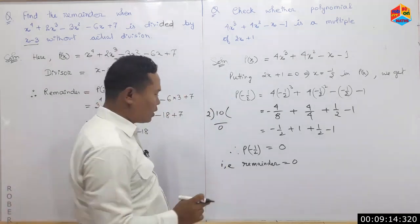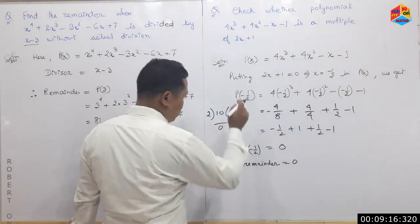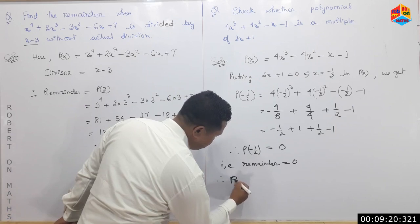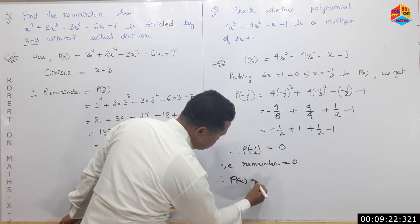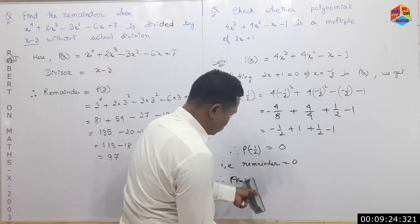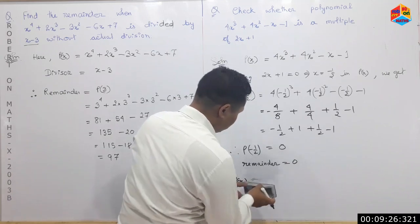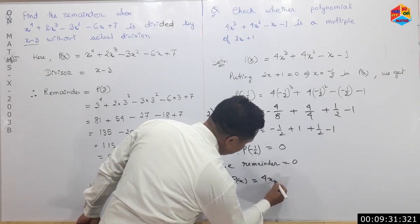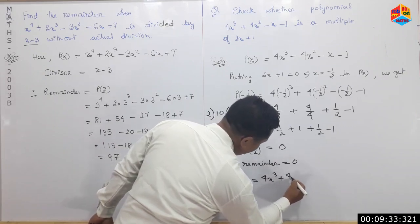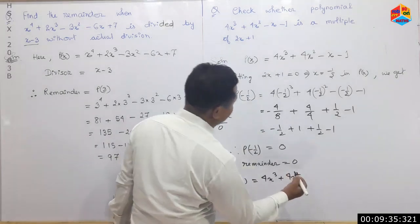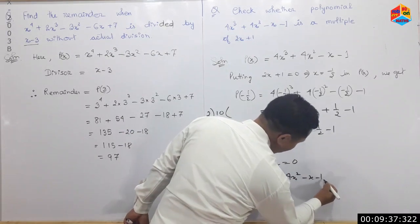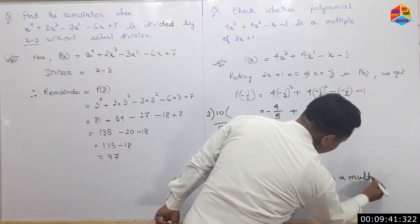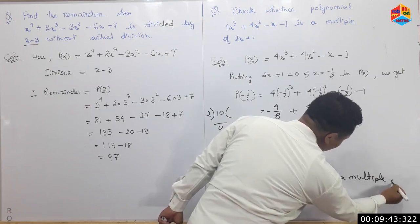The remainder is 0. This depends on P of x. P of x is equal to 4x cubed plus 4x squared minus x minus 1, which is a multiple of twice x plus 1.